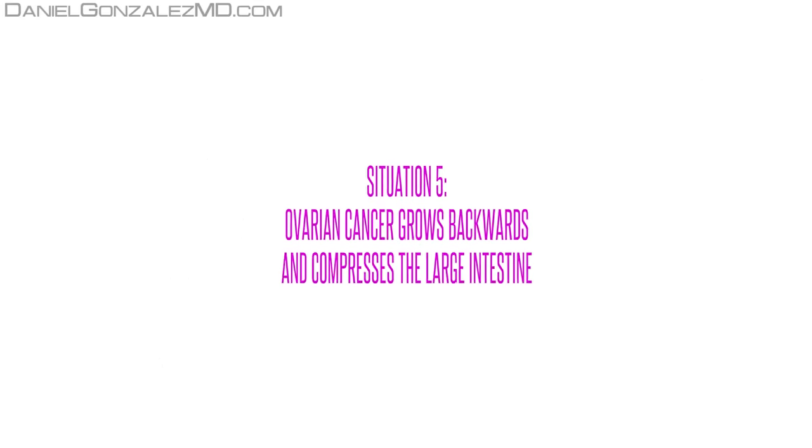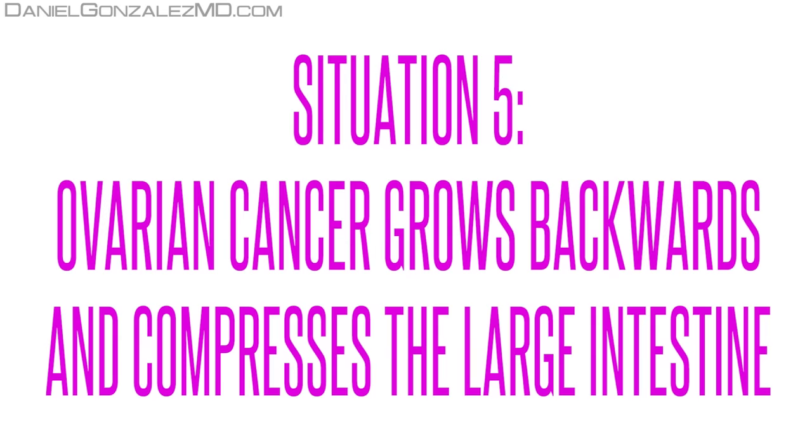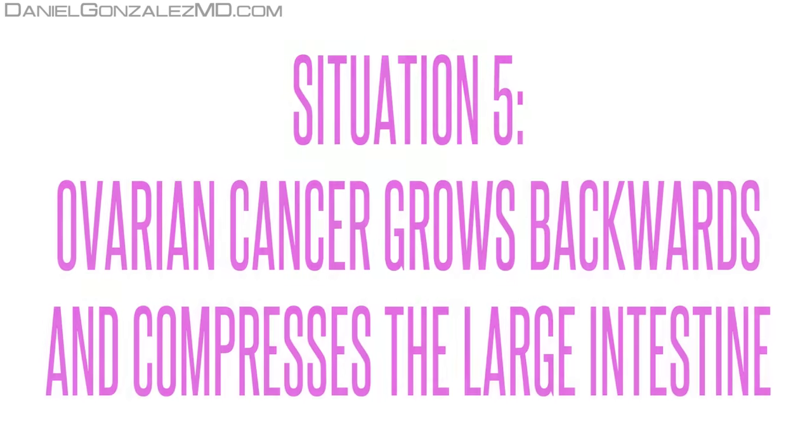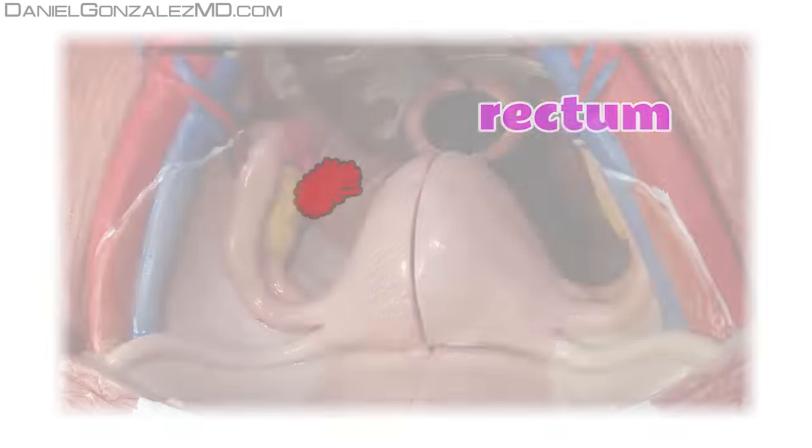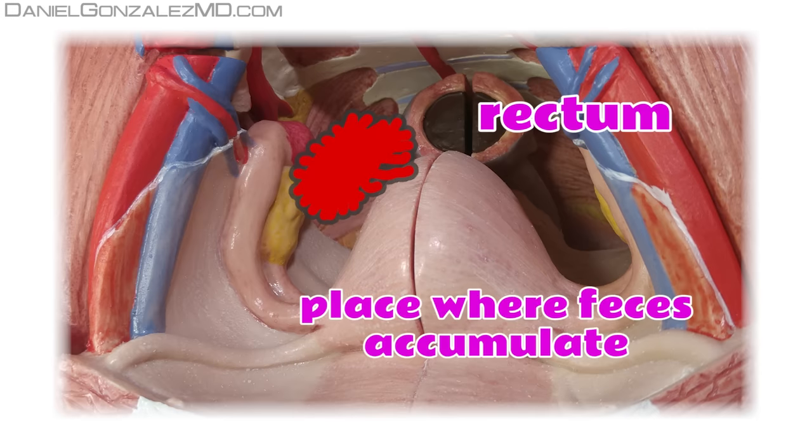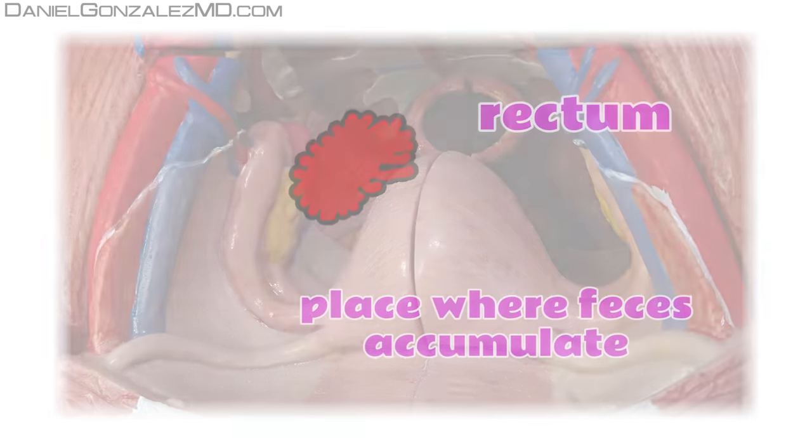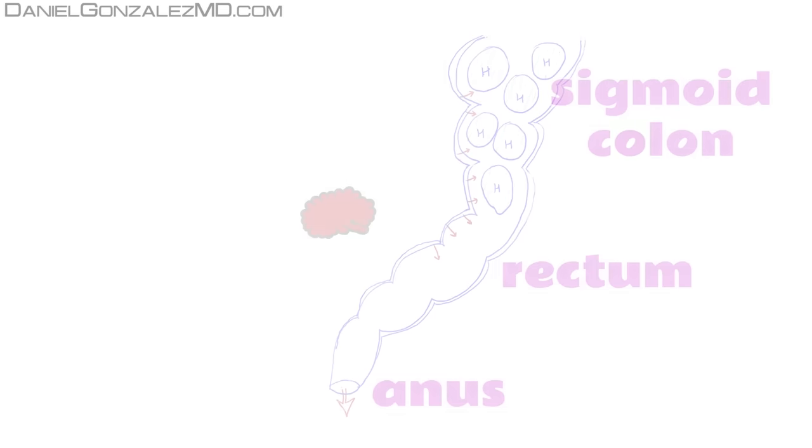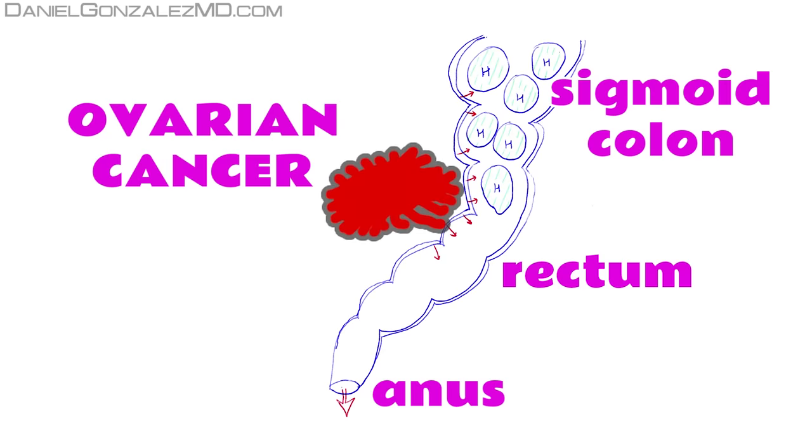Situation 5. Ovarian cancer grows backwards and compresses the large intestine. If the tumor prefers to grow backwards, as the neighbors are the rectum and sigmoid colon, the final sections of the large intestine where the feces accumulate before being expelled through the anus, if ovarian cancer pushes them, it will make transit of stool more difficult, which favors constipation.